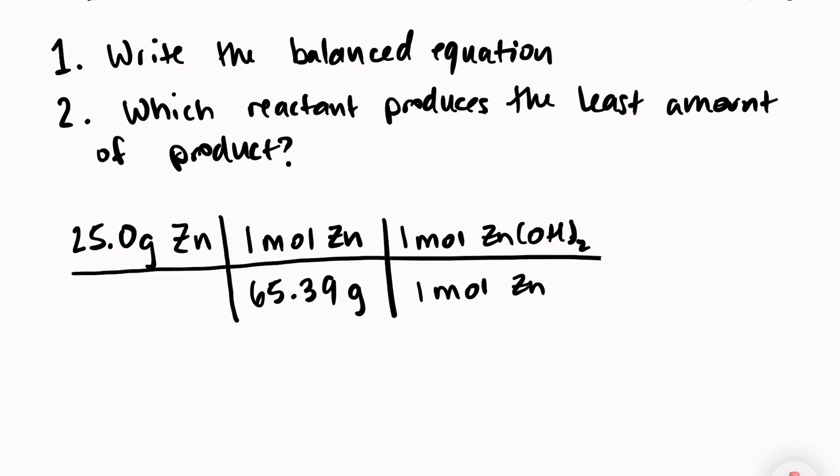So to solve this problem all that I have to do is take 25 divided by 65.39 which gives me 0.382 moles of zinc hydroxide that has been formed.